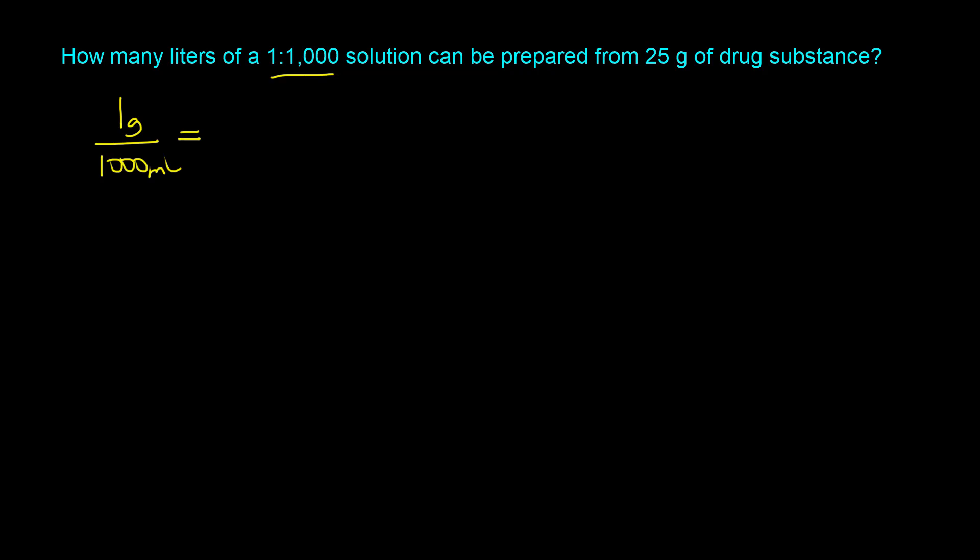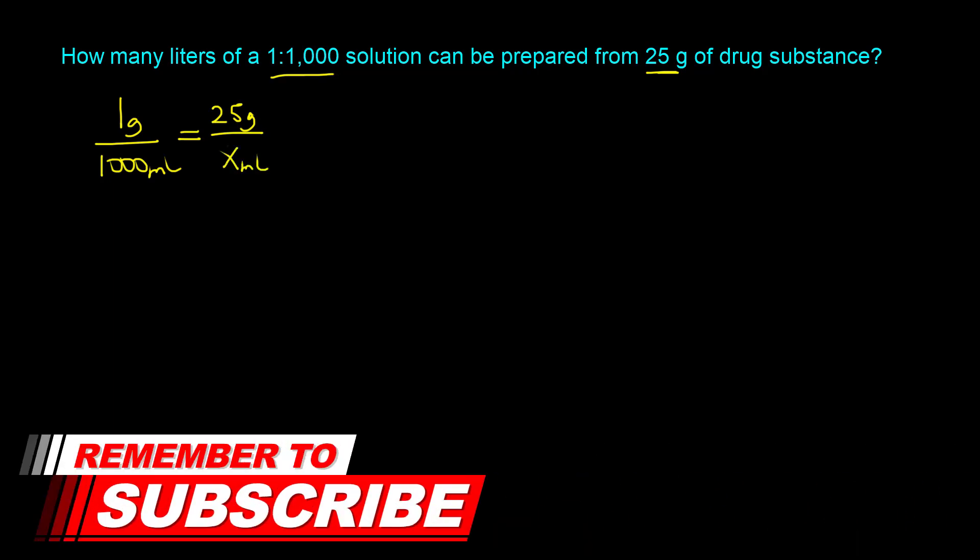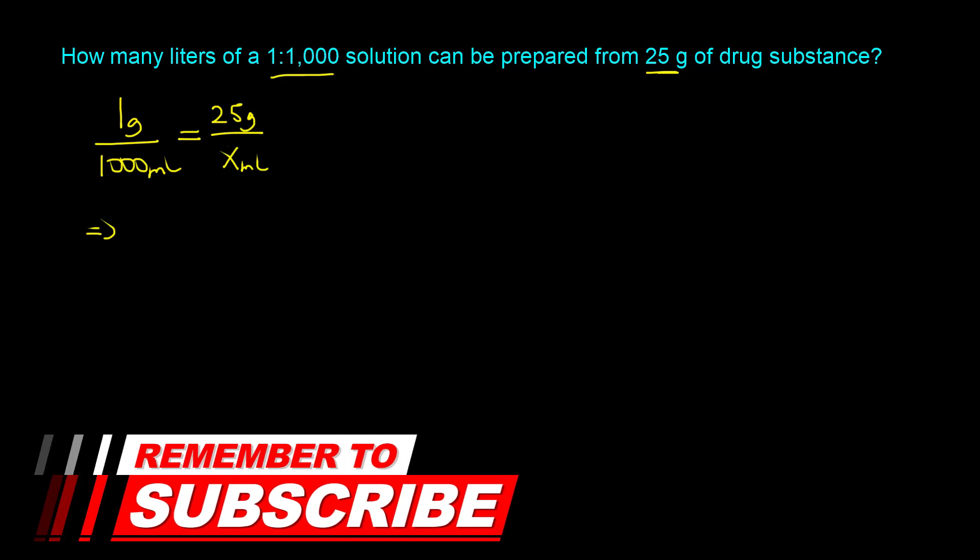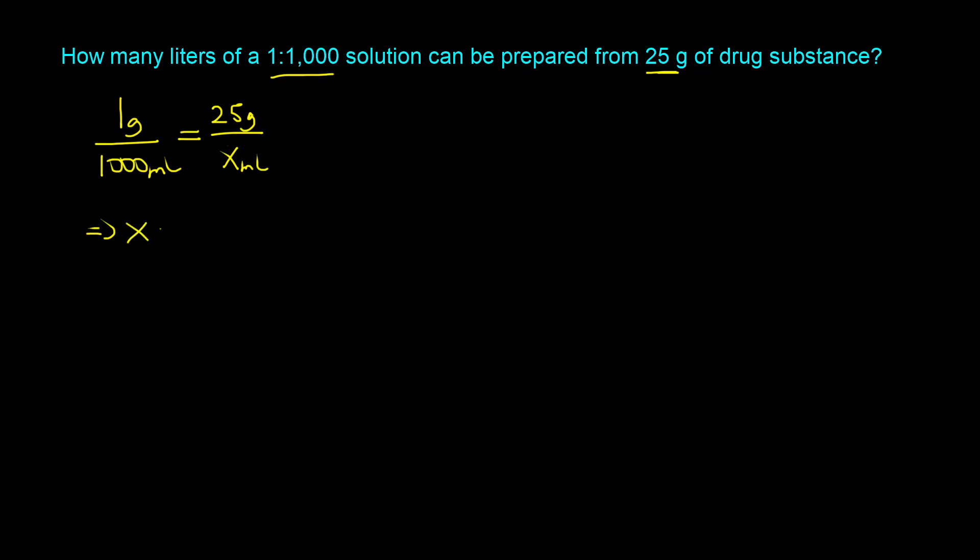So we now need to set up a proportion. What we want to do is prepare some quantity of solution from the 25 grams. So in this instance the 25 grams goes in the numerator and we need to figure out how many milliliters that will give us. So we can solve for x. X is going to be equal to 25 grams times 1000 milliliters divided by 1 gram. The grams cancel out and you're going to end up with 25,000 milliliters.